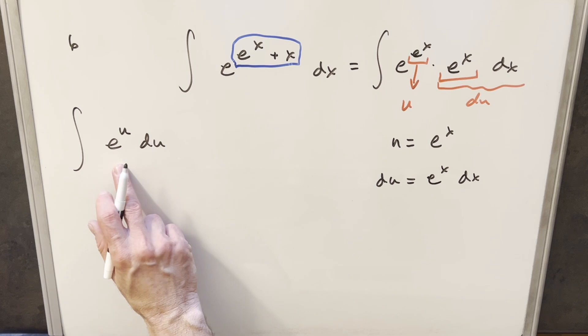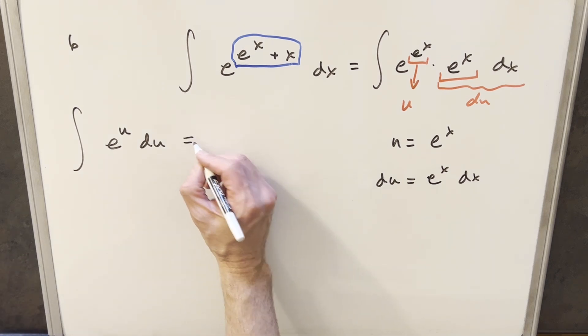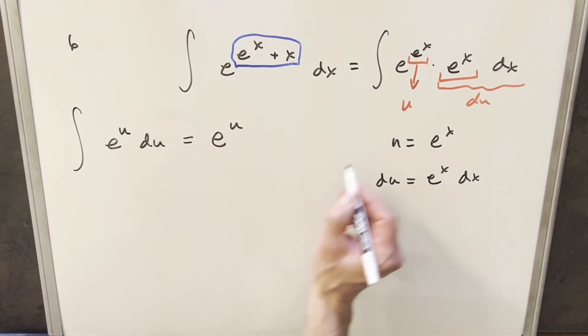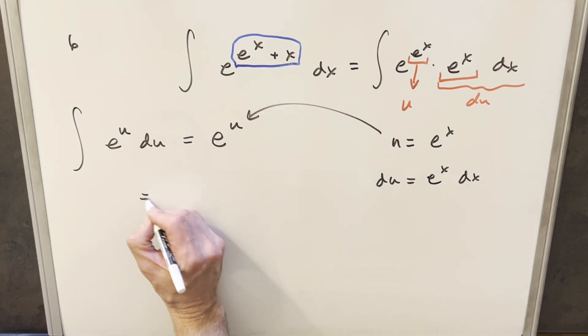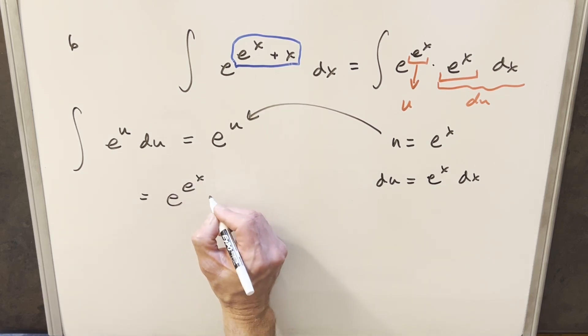The first term is going to become e to the u, and everything else is just du. The nice thing here, integral of e to the u is just e to the u. So all I need to do is just back substitute to finish this off. And so for our final solution, we just have e to the (e to the x) plus c, and that's it.